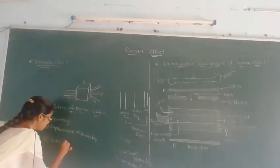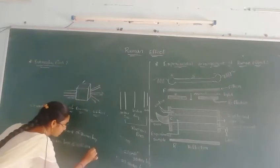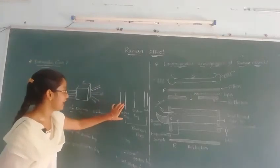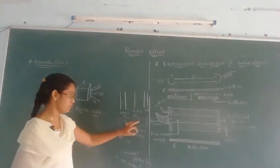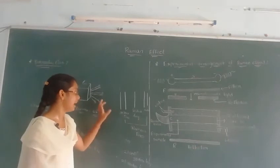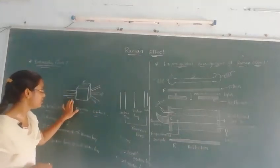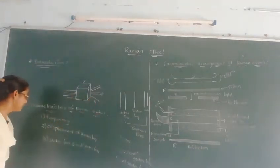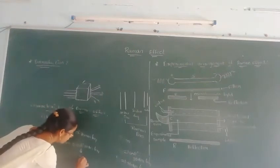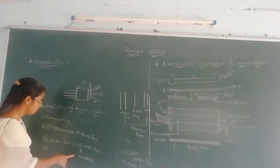Third point: Stokes lines and anti-Stokes lines. The frequencies greater than the incident frequency are called anti-Stokes lines. The frequencies smaller than the incident frequency are called Stokes lines. Fourth point: the anti-Stokes lines are weaker than Stokes lines due to their greater frequency.